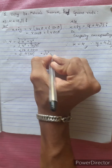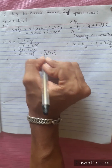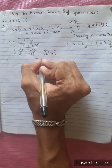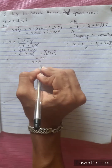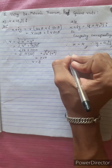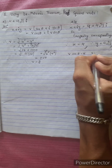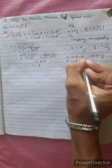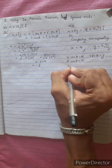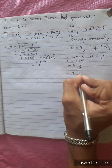So r is equal to 8. R cos theta is equal to x, and R sin theta is equal to y. Therefore, 8 cos theta equals x, so 4 cos theta equals 4 by 8, giving cos theta equal to 1 by 2.